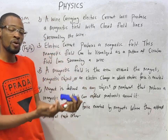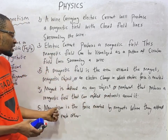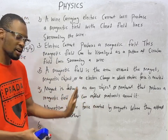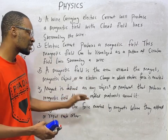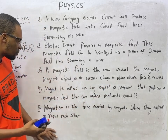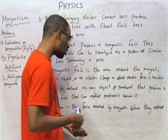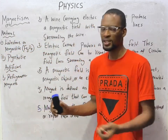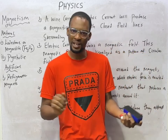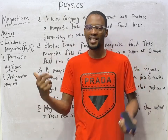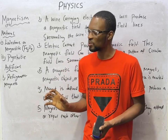A magnet is any object or material that produces a magnetic field affecting materials around it. Magnetism is the force exerted by magnets when they attract or repel each other. There is also electromagnetism, which is electric and magnetic force acting together — a big topic especially in electrical and electronic engineering.